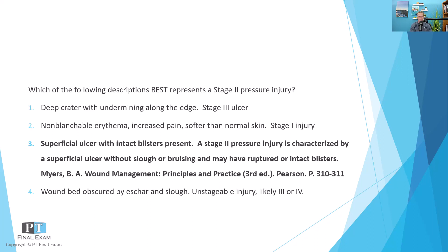For a stage two pressure injury, characteristics include a superficial ulcer that could have intact or ruptured blisters — either liquid-filled, serum-filled, or blood-filled. However, it is unlikely there would be any slough or eschar present. Eschar and slough refer to necrotic tissue — either dried exudate or dead skin aggregated inside the wound. All of that is unlikely in a stage two. Rather, you'd see superficial partial thickness ulceration that could have ruptured or intact blisters.